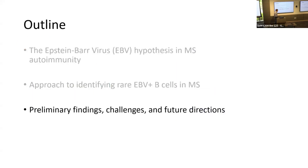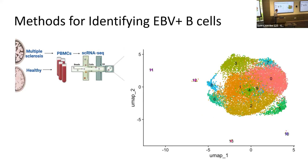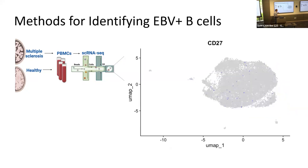Some preliminary findings: in six months I was able to run about six samples, but I've only finished analysis for one. The data is shown as a UMAP plot, where every dot is a cell and dots closer together are more similar in gene expression. Using CiteSeq information, we can identify what types of B cells are present — for example, cells with higher expression of CD27, a marker of memory B cells, which is thought to be where EBV probably resides. Unfortunately, in this sample we did not see EBV viral transcripts, so we didn't get a positive result on this first sample.